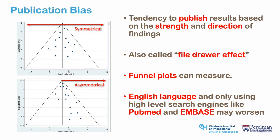Publication bias is what I would call a meta-bias. It is not a bias one study can have on its own, but rather a bias the literature as a whole can have, making it more dangerous because you never know it's there. Publication bias is where studies are published based on the strength and direction of their results; using PubMed, Embase, and the English language makes this worse. A funnel plot can potentially reveal this bias: if you plot all studies on a subject, results should cluster around the mean effect size, with smaller studies showing more variance and larger studies converging toward the mean, forming a funnel shape. An asymmetric funnel implies small negative studies have not been published — the file drawer effect. Programs exist to adjust for this in meta-analysis.